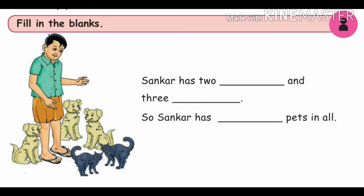Fill in the blanks. You can see in the picture there are some pet animals — dogs and cats — along with a boy. Shankar has two cats and three dogs, so Shankar has five pets in all.